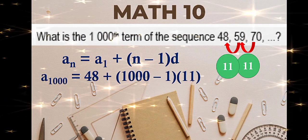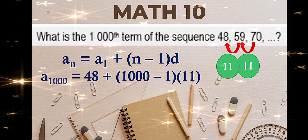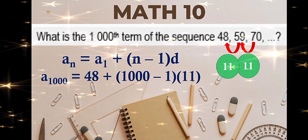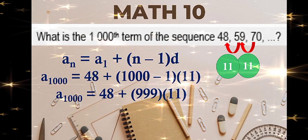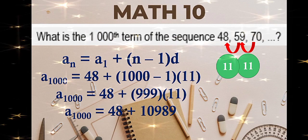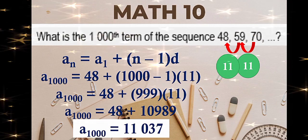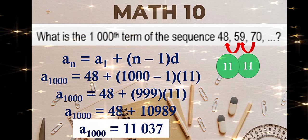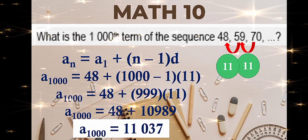Substitution: our n is 1000, a sub 1 (the first term) is 48, n again is 1000, and the common difference is 11. Simplify: 1000 minus 1 is 999, multiplied by 11 is 10,989. Plus 48, that is 11,037. Hence, the 1000th term of the sequence is 11,037.